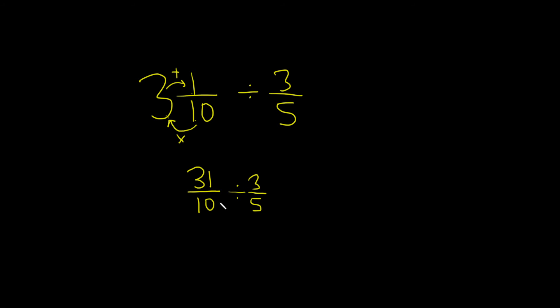So whenever you divide, you actually multiply by the reciprocal. So this is 31 over 10. And we change the division to times, and then we flip the 3 fifths.